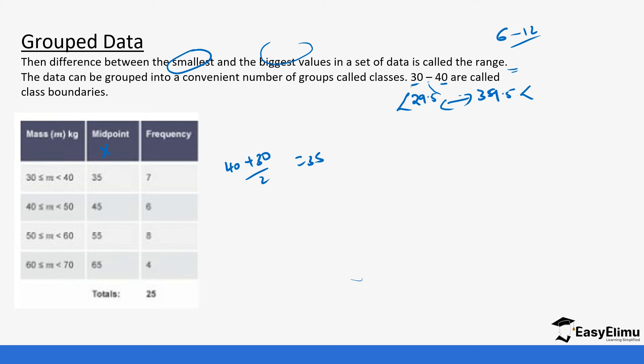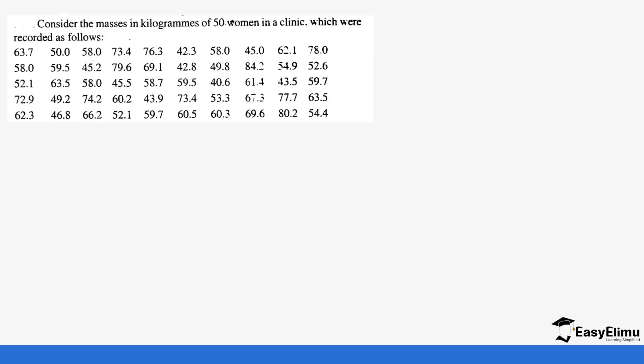Let's get an example of data and convert it into grouped data so that those key terms we are talking about will come out clearly. We have these masses in kilograms of 50 women in a clinic which were recorded. This is raw data. It hasn't been organized. We want to record it in a frequency distribution table, but in this case in a grouped setting. The first thing we want to get is the highest value so you can know how many classes we are working with.